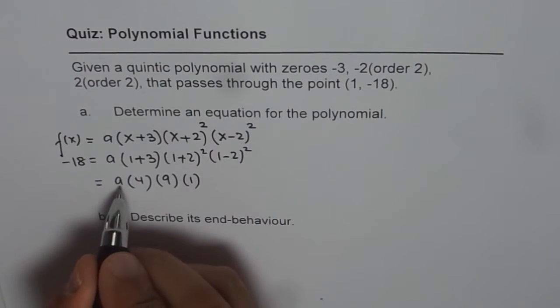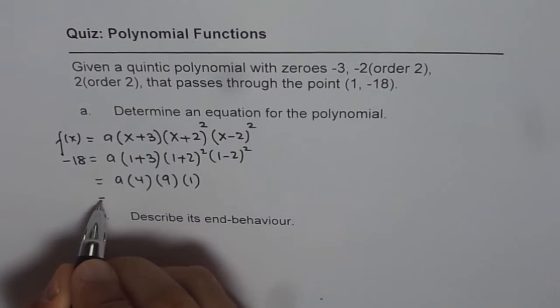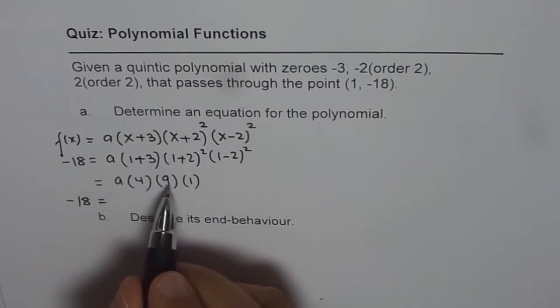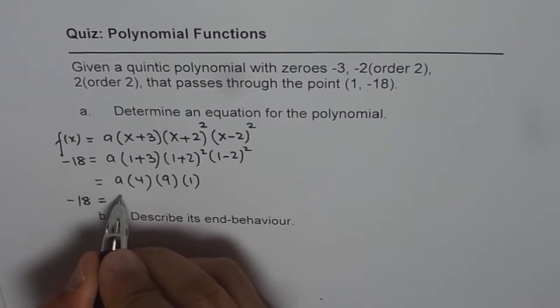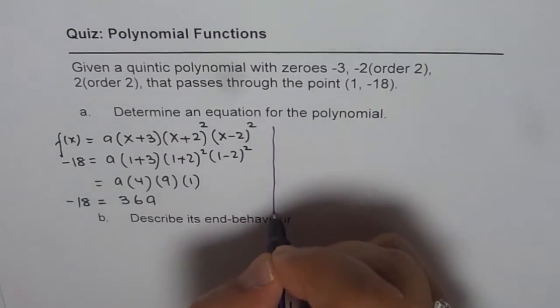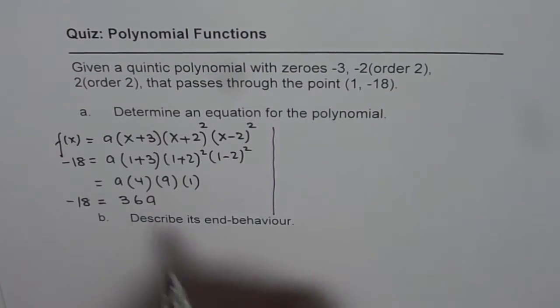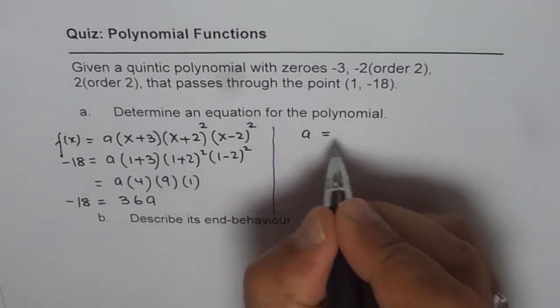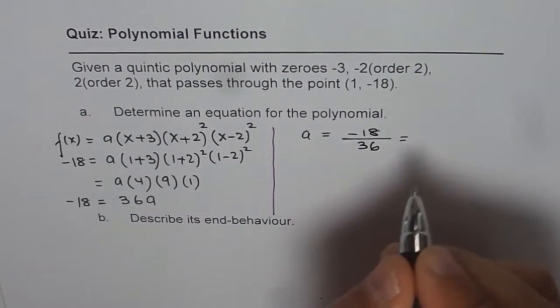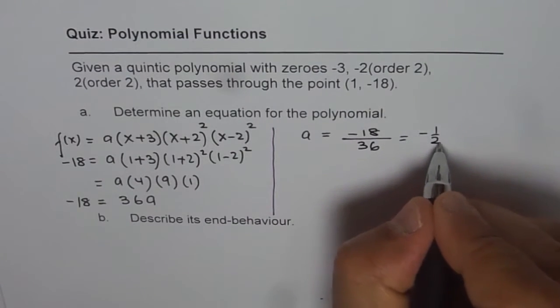And from here we can find the value of a. So we get -18 equals to 9 times 4, 36a. So what I will do is I will divide -18 by 36 to get the value of a. So from here we get a equals to -18 divided by 36, which is minus half.